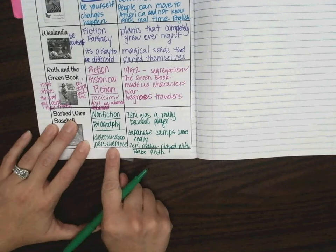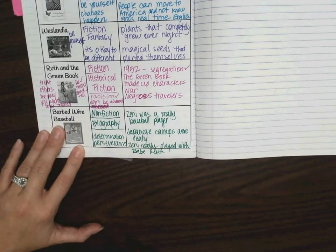so determination means like not going to give up. Perseverance is that idea that even when things get difficult, you're going to still push through.